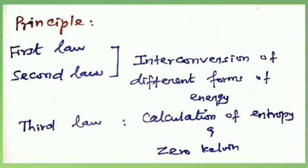The first two laws, the first law and second law, summarize the actual experience of interconversion of different forms of energy. The third law deals with calculation of entropy, that is randomness, and the unattainability of absolute zero Kelvin.